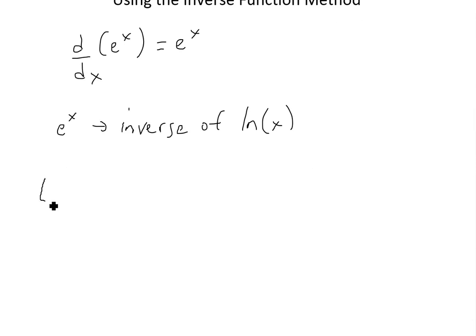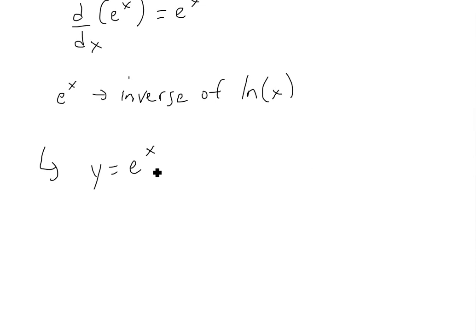So if we write, first of all, y equals e to the x, the inverse of this is basically now solving for x. In other words, x is equal to the inverse, we'll just write ln y, because they're inverse of each other. So we just say x equals ln y, it's the inverse of it.